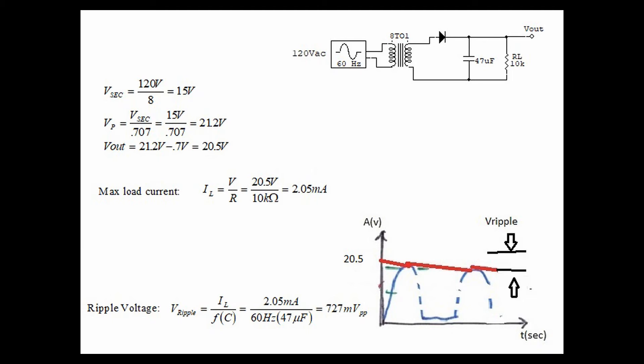We can calculate the ripple voltage with the formula shown, which says that it's the maximum current divided by the frequency times the capacitance. In this case, 2.05 milliamps divided by 60 hertz times 47 microfarad, and it equals 727 millivolts peak to peak. That's a considerable number, and the lesson to be learned is that to improve or to lessen the ripple and to improve the DC, we need more and more capacitance or to reduce the current delivered through the load.